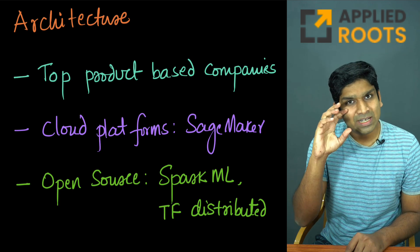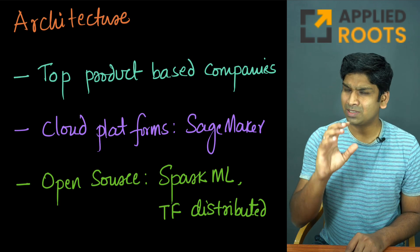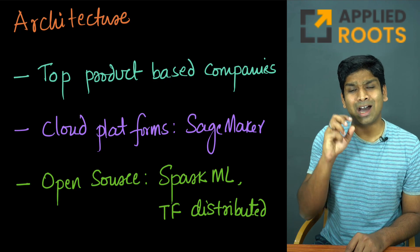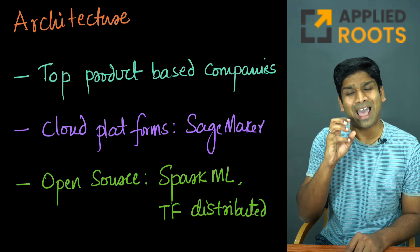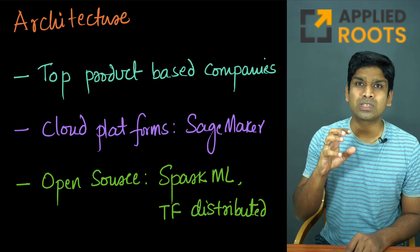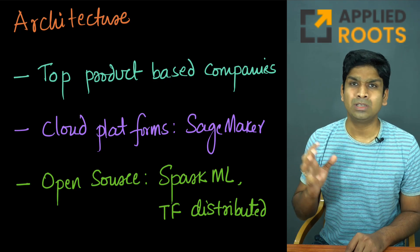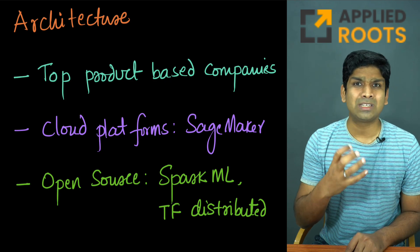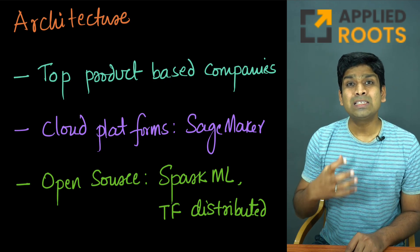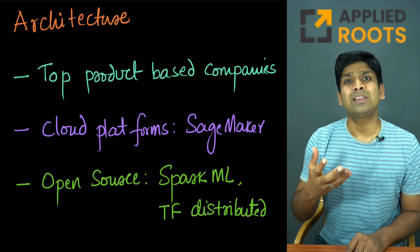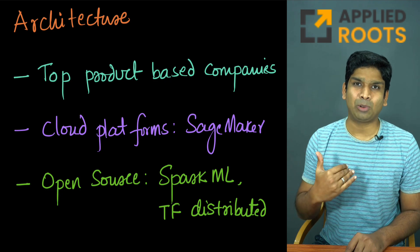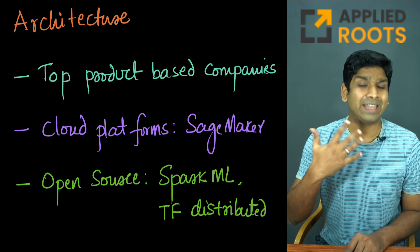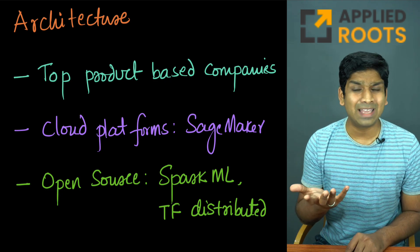When we discuss architecture, just wanted to give you a little heads up: we will discuss architectures that are actually used in top product-based companies — companies like Google, Amazon, Netflix, and Uber. These are architectures that they have deployed, based on the research work they've published and the technical blogs that they have published.